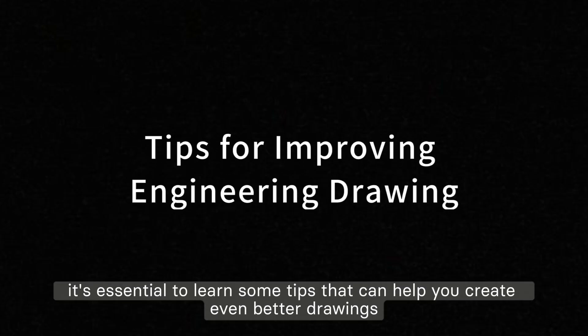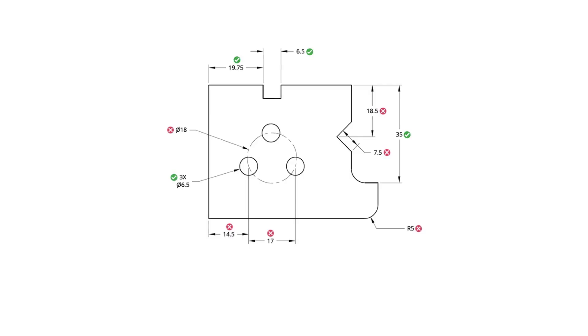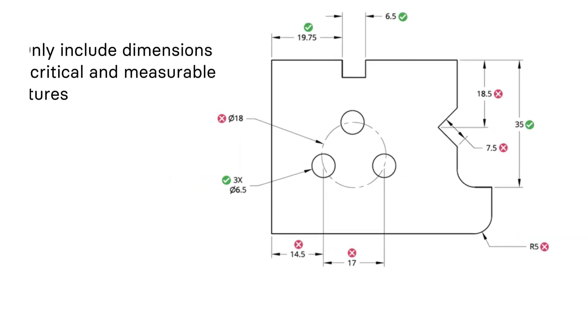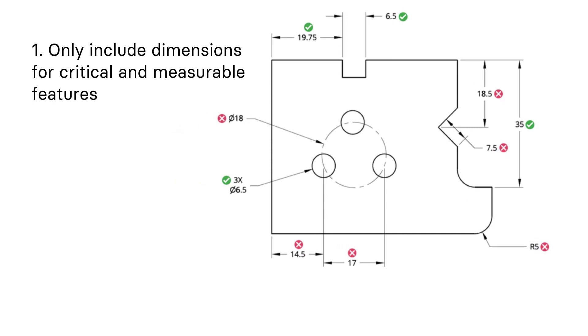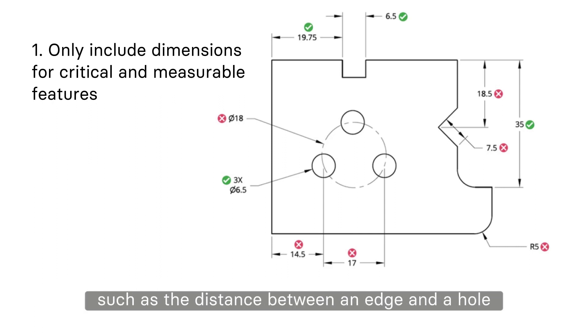Tip number one, only include dimensions for critical and measurable features. Start with the overall dimensions of the part, and then add dimensions that are most critical for functional purposes, such as the distance between an edge and a hole.